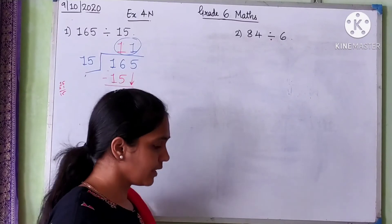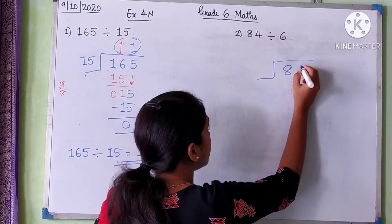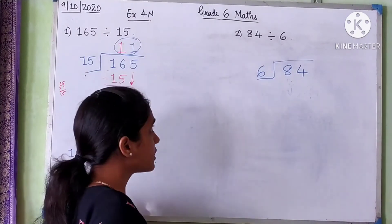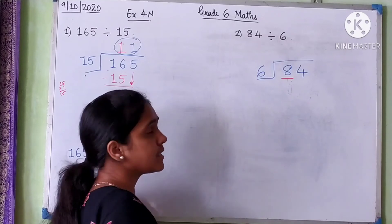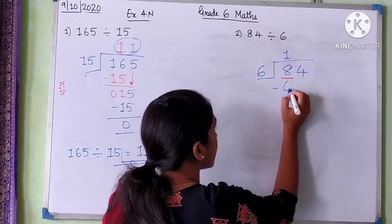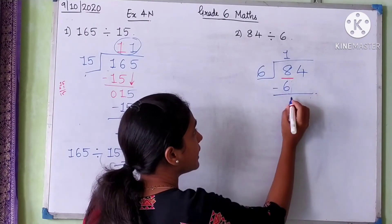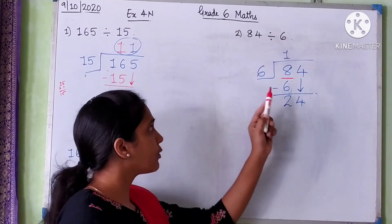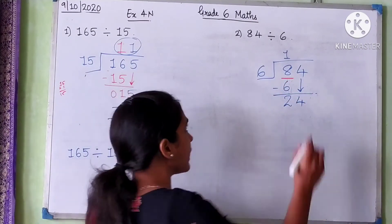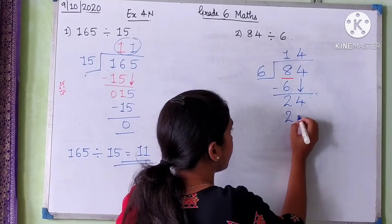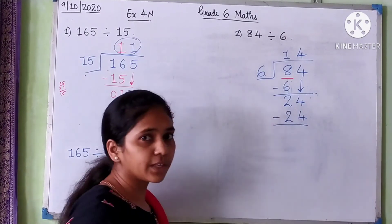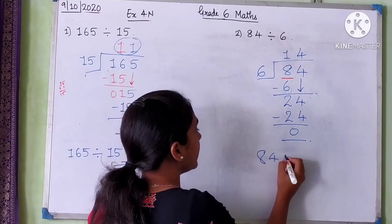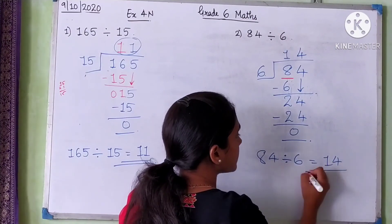The second sum is 84 divided by 6. Since 6 is a single-digit number, we take only the first digit: 8. 6 × 1 = 6; 8 minus 6 = 2. Bring down 4 to get 24. 6 × 4 = 24; remainder is 0. So 84 ÷ 6 = 14.